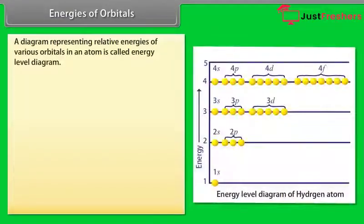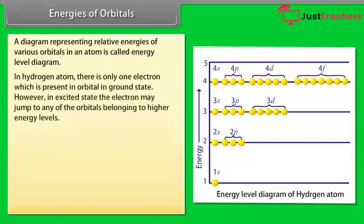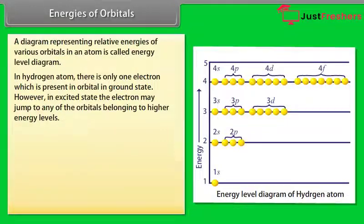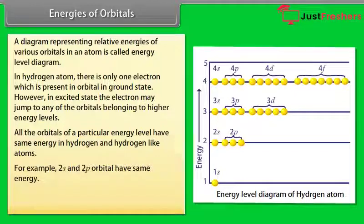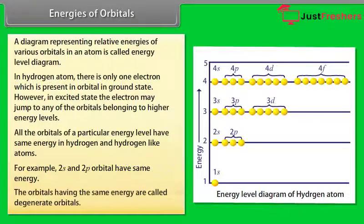Energies of orbitals: A diagram representing relative energies of various orbitals in an atom is called an energy level diagram. In a hydrogen atom, there is only one electron present in the orbital in the ground state; however, in the excited state, the electron may jump to any of the orbitals belonging to higher energy levels. All the orbitals of a particular energy level have the same energy in hydrogen and hydrogen-like atoms — for example, 2s and 2p orbitals have the same energy. The orbitals having the same energy are called degenerate orbitals.